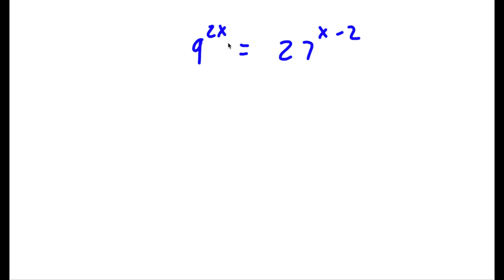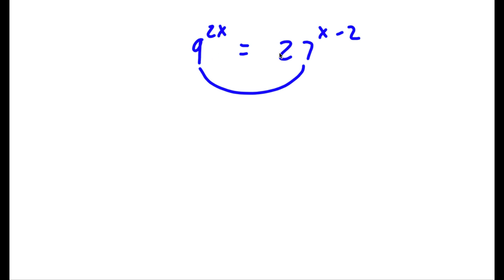Alright, so I have 9 to the power of 2x is equal to 27 to the power of x minus 2. The simplest way to solve this problem is to actually make both of these bases the same. Right now, we have a base of 9 and a base of 27, and we want to make these two bases the same.